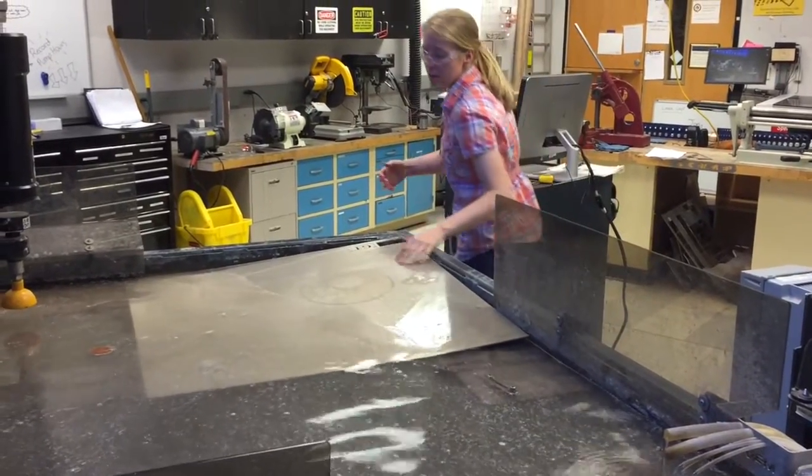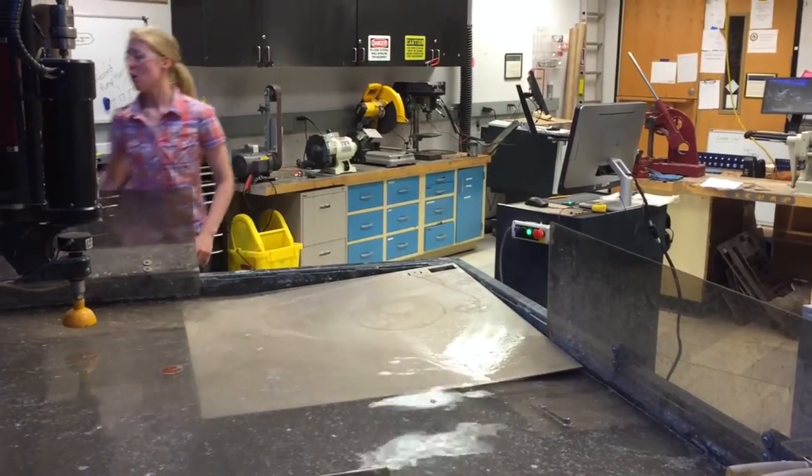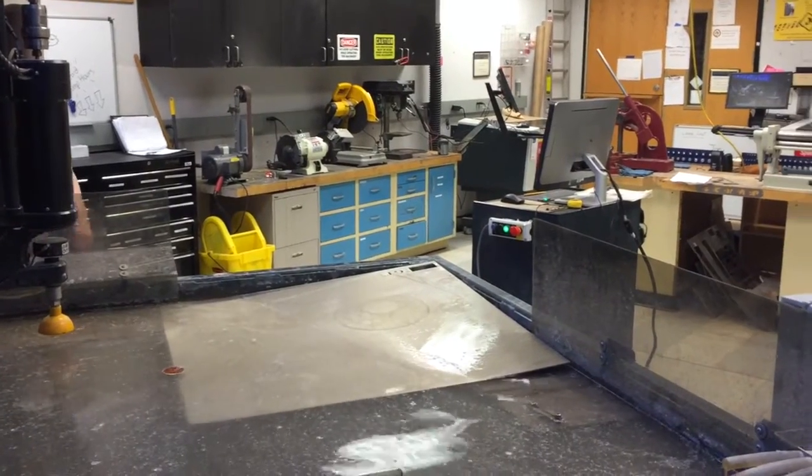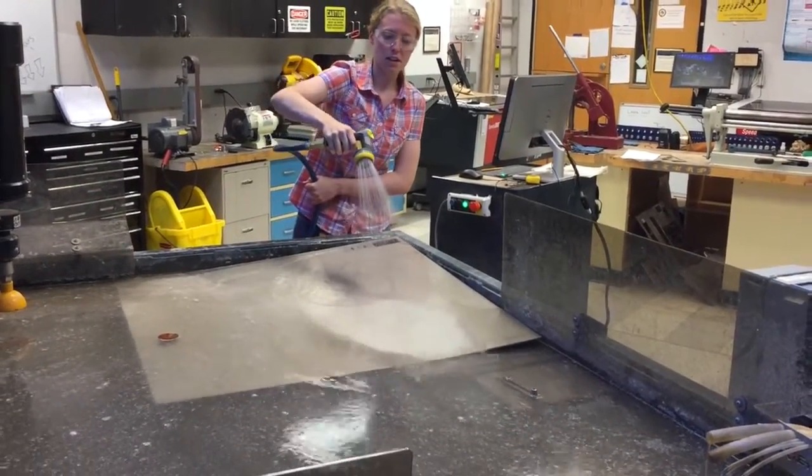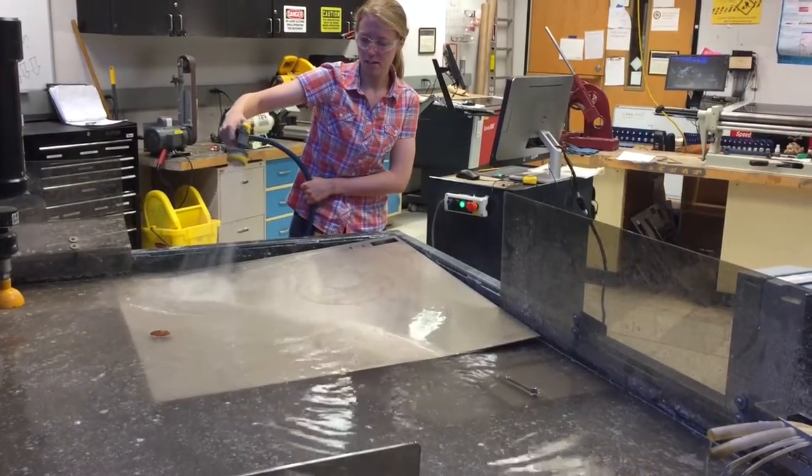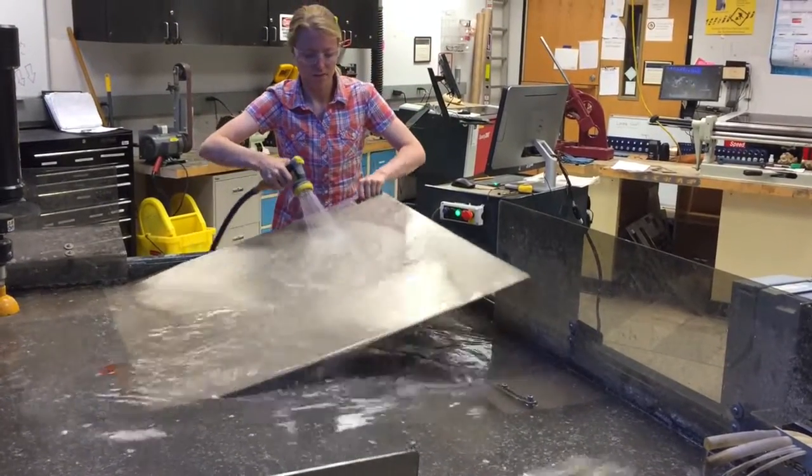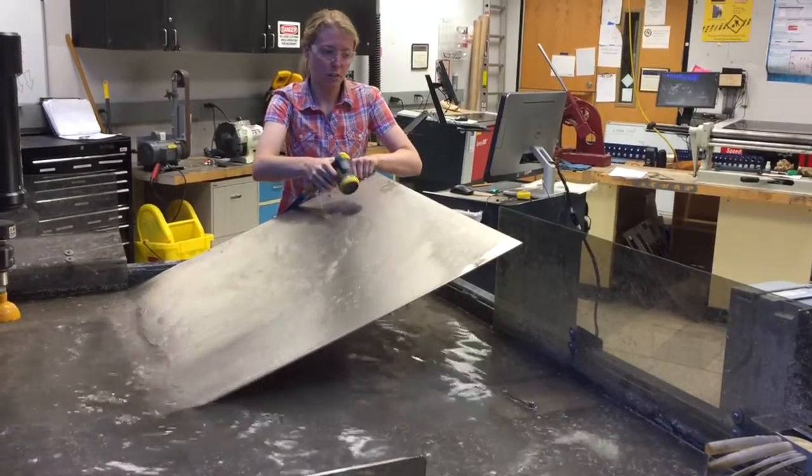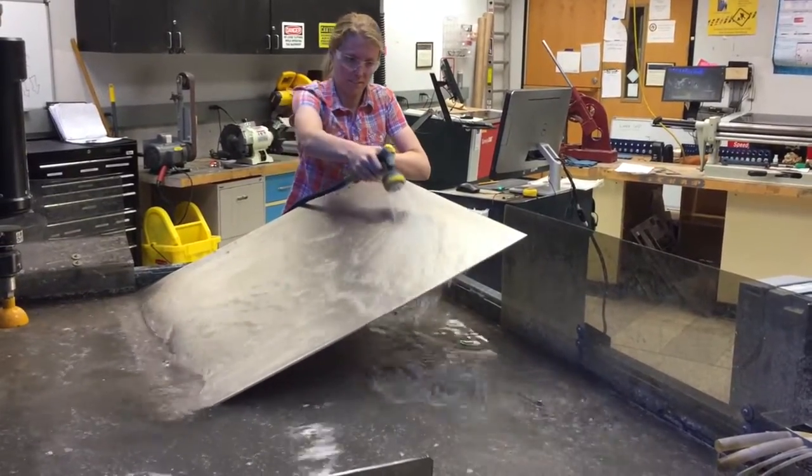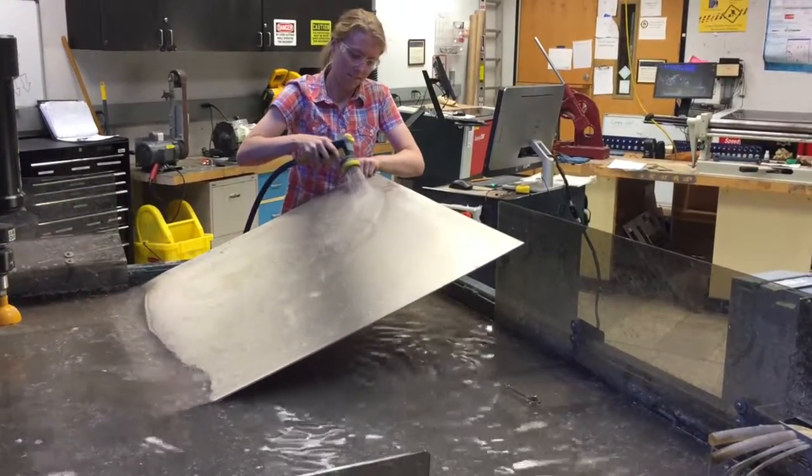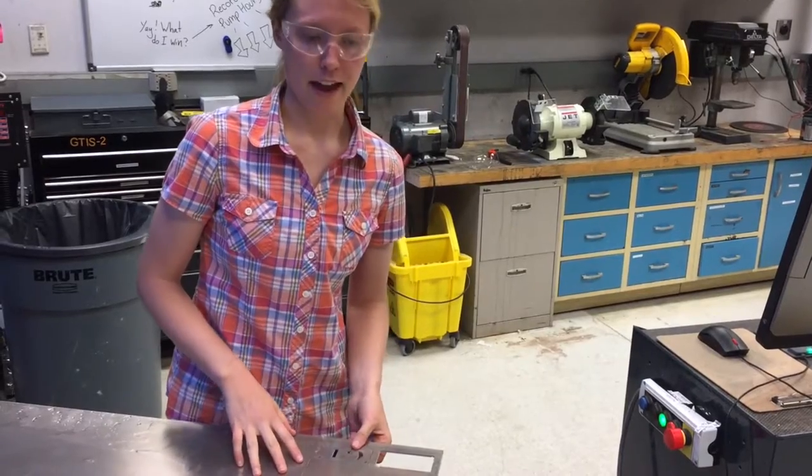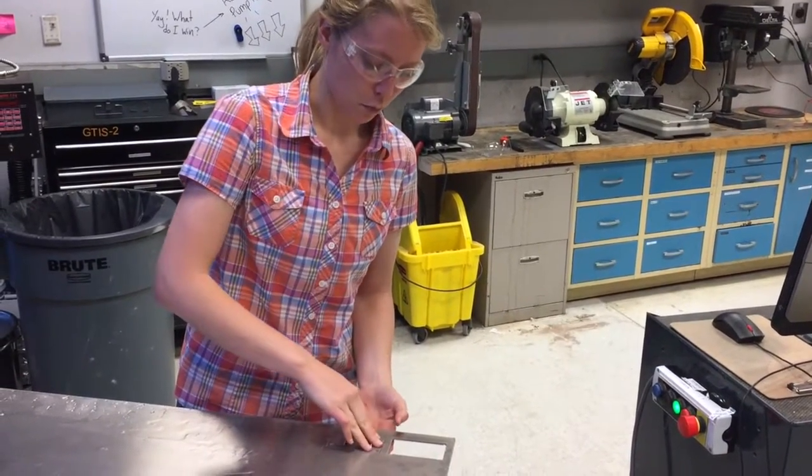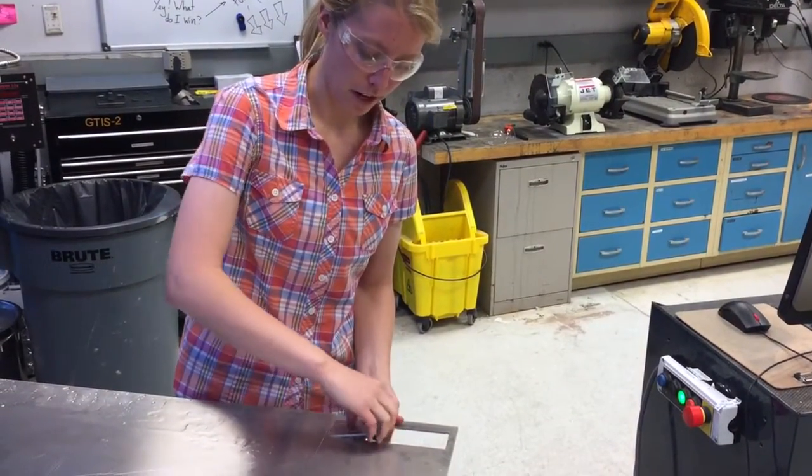It's a good idea to use the hose over here and spray the garnet off of your piece. Careful not to spray too much out though. Now since your part is still attached to the material because of the tab, you'll have to wiggle it back and forth until it breaks.